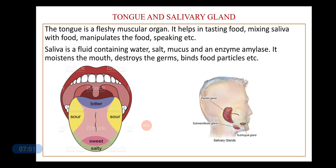The tongue also helps in speaking — we are able to speak different languages and make different sounds with the help of the tongue. The salivary glands secrete saliva, the watery fluid always present inside the mouth. There are three pairs of salivary glands: one set is present underneath the tongue, one at the base of the ear, and the third on the inner side of the lower jaw.